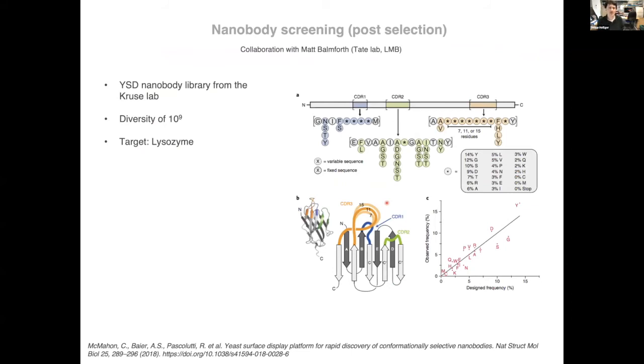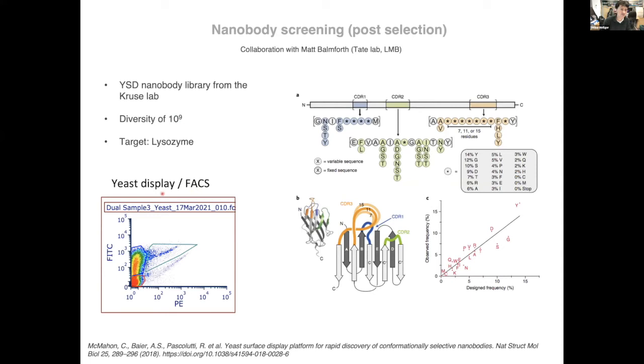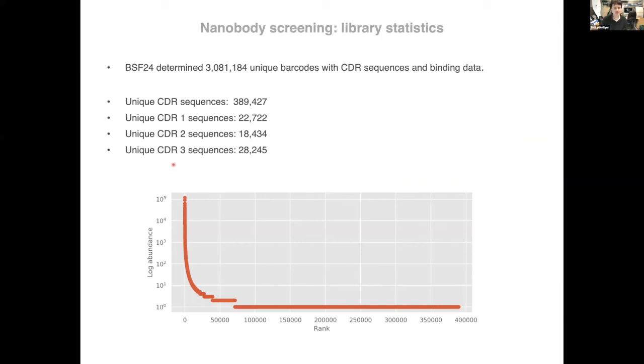But another experiment which we conducted in collaboration with Ben Murrell and the structural studies division here at the LMB. This is based on a commercially available yeast display library of a nanobody library from the Kritzer lab about 10 to the 9 diversity. Again, we looked at lysozyme binding. We did three rounds of yeast display selection by both FACS and MACS. And then we analyzed the output of the selection experiment on the flow cell. You can see the distribution here after three rounds. There's still a great degree of diversity in the library and really only a small fraction of the library has a signal that increases above background.